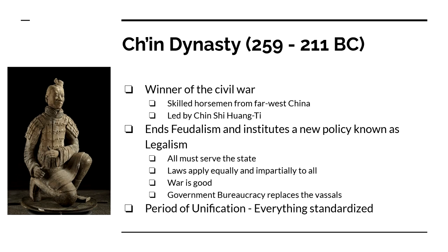The leader of the Qin dynasty is Qin Shi Huangdi. They're going to be from far west China, and the Qin dynasty is going to last from 259 to 211 BC — not very long. Qin Shi Huangdi is going to end feudalism and come up with a new idea known as legalism. Simplified: all must serve the state, laws apply to everybody, and war is good because it promotes patriotism and brings the country together. Since there are no more feudal vassals or nobles, everything is replaced with a government bureaucracy.